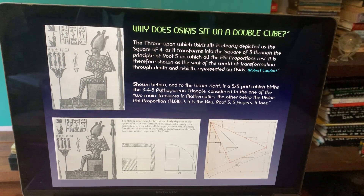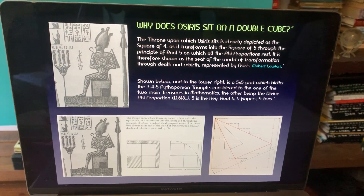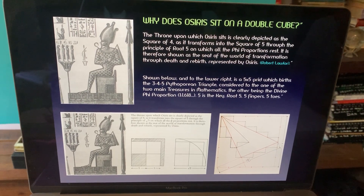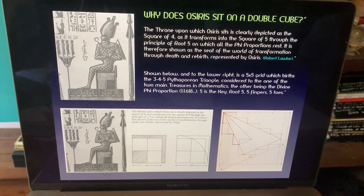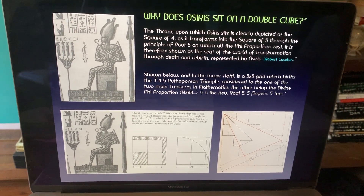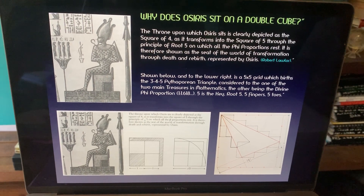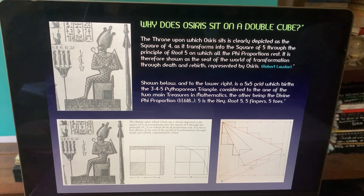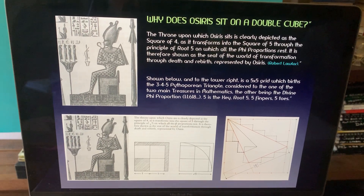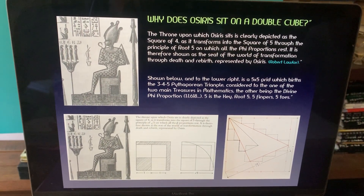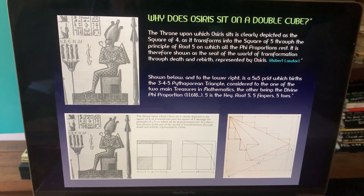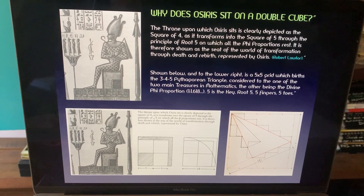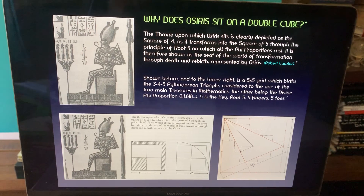Why does Osiris sit on a double cube? The throne upon which Osiris sits is clearly depicted as the square of four, as it transforms into the square of five through the principle of root five, on which all the five proportions rest. It is therefore shown as the seat of the world of transformation through death and rebirth, represented by Osiris.